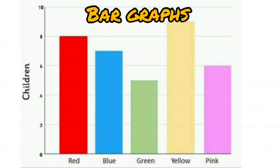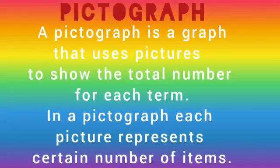As you can see in this example, different strips are drawn against each number. It shows how many children like red, blue, green, yellow, or pink color. This data is represented by a bar graph.